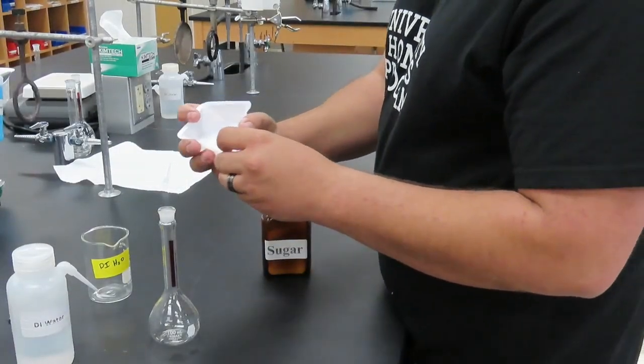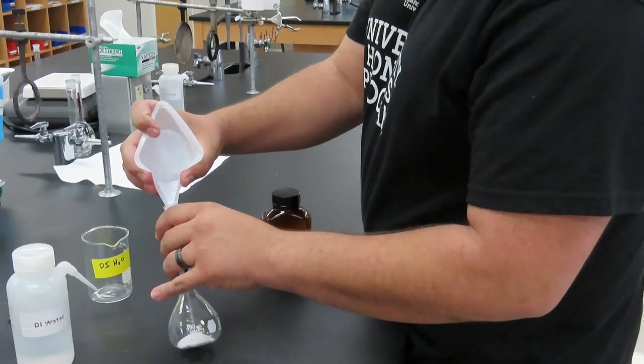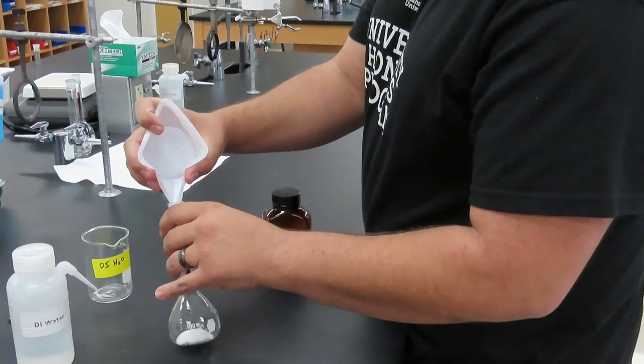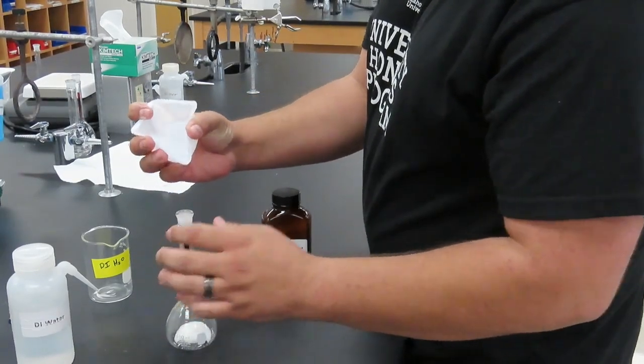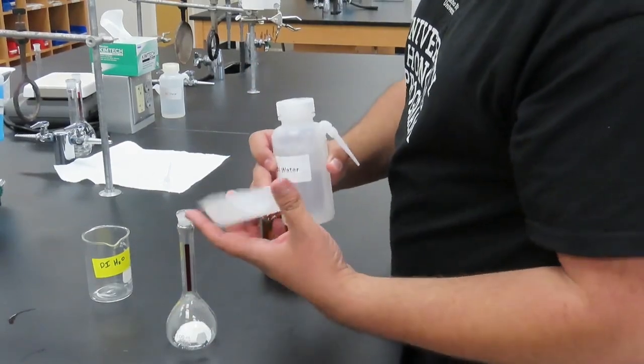Having that, you're going to pour the pre-weighed solid solute down the neck of a clean volumetric flask. Be sure to rinse your weigh boat into the flask to get all the solid solute.